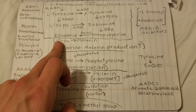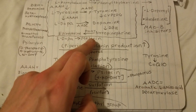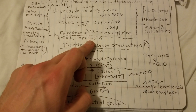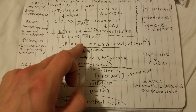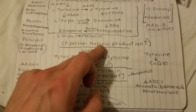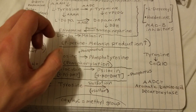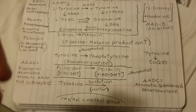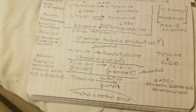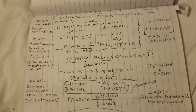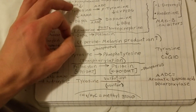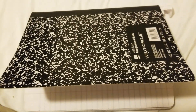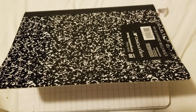L-DOPA is also the precursor to melanin, which has to do with your skin pigmentation. Piperine seems to enhance your production of melanin, which implies that piperine has some sort of effect on L-DOPA levels — but that's just a theory. Anyway, I think it's really helpful to draw this stuff out in diagrams so you get more of a visual. Have a great day — that's all I have for right now.